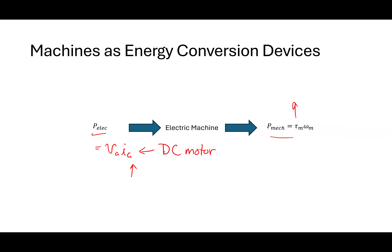If I've got a three-phase machine, P electrical will basically be three times whatever the line-to-neutral voltage is on one phase, times the current into that phase, times the power factor — the cosine of the impedance angle phi sub z. So real power in equals mechanical power out.